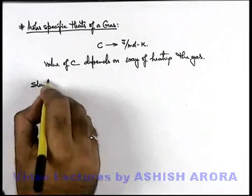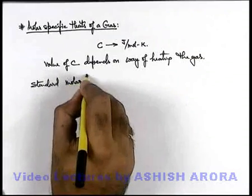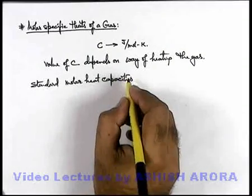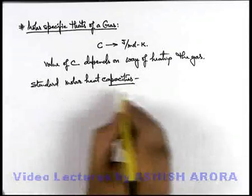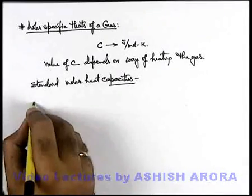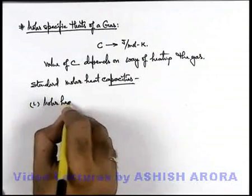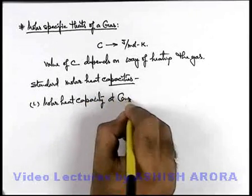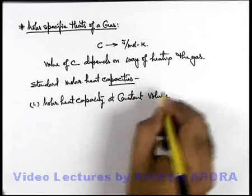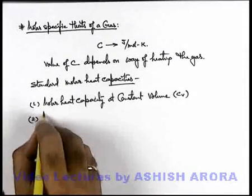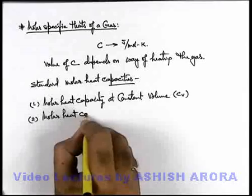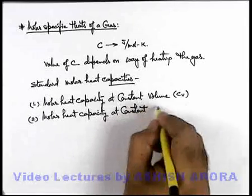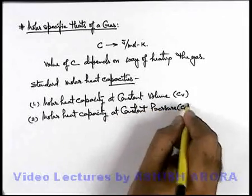These two standard molar heat capacities, which can also be called specific heat capacities of a gas, are given in two ways. The first is molar heat capacity at constant volume, which is denoted by Cv. And the second one is molar heat capacity at constant pressure, which is given as Cp.